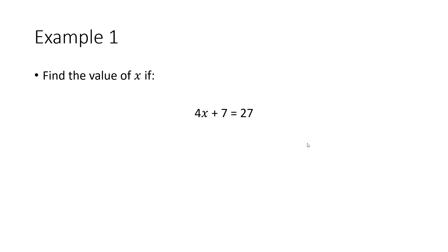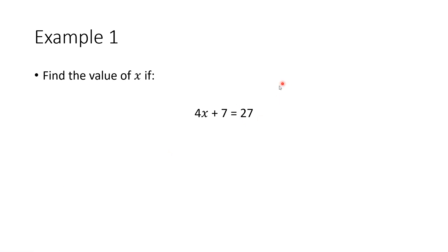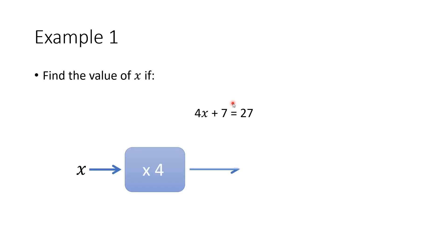Let's have a look at this one. Find the value of x if 4x plus 7 equals 27. We know that 4x means 4 times x, we're adding 7, and we have an output of 27. As a function machine, we lay it out like this: we have x, we're multiplying it by 4, we're adding 7, and we get an answer of 27.